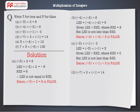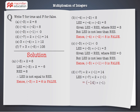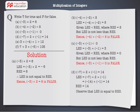D: Minus 7 into 2 into minus 1 is equal to 14. LHS equals minus 7 into 2 into minus 1, which equals minus 14 into minus 1, which equals 14. RHS equals 14. Therefore, LHS is equal to RHS. Hence, minus 7 into 2 into minus 1 is equal to 14 is true.